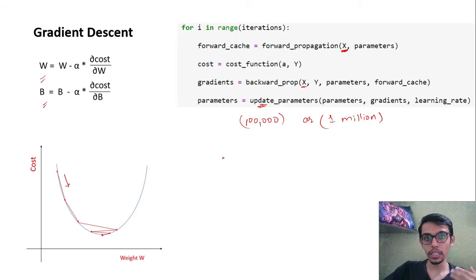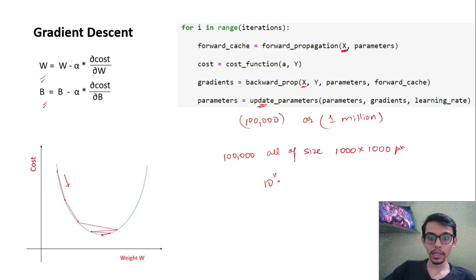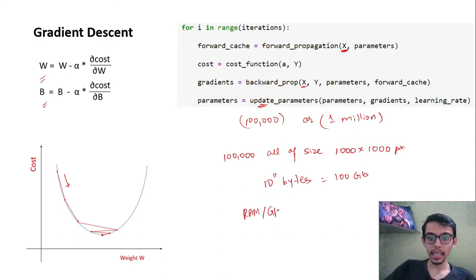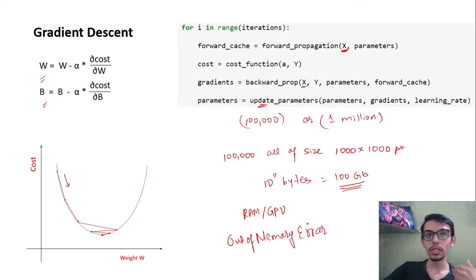It is also possible that we have a lot of features in every data point — for example, 100,000 images all of size 1000×1000 pixels. In this case we will be dealing with almost 10^11 bytes of data, which equals about 100 GB. Our RAM or GPU is very limited — a maximum of around 64 GB — so it won't be able to handle this much data at once and we will get an out-of-memory error, making training impossible. To overcome this, we use mini batch gradient descent.